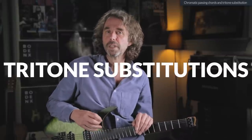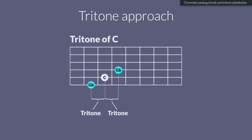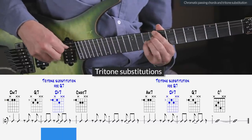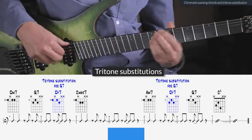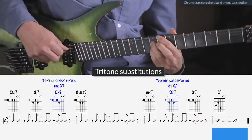Shell voicings are also very convenient shapes for playing tritone substitutions. Whenever a dominant 7 chord or an extended version passes by, you can substitute it for the dominant chord that is a tritone higher or lower than the root of the original dominant 7 chord. So you could substitute the G dominant 7 chord for the D flat dominant 7 chord. If you want to know more about tritone substitutions, watch my dedicated video about this subject. Now if we apply these two techniques — the chromatic approach chord on the fourth beat and the tritone substitution — over Blue Bossa, then we get something like this.